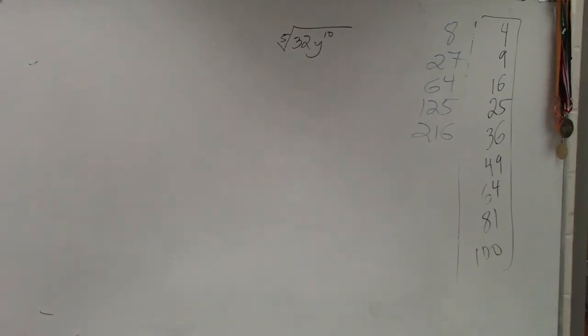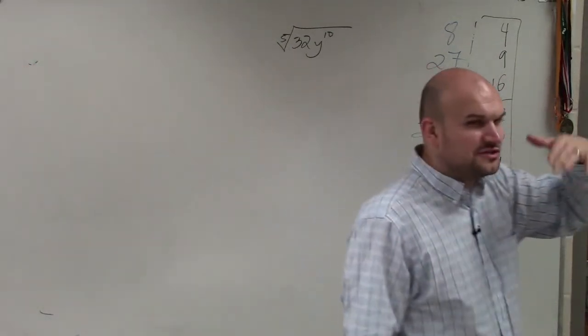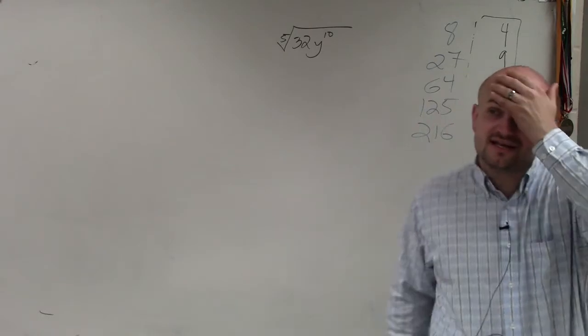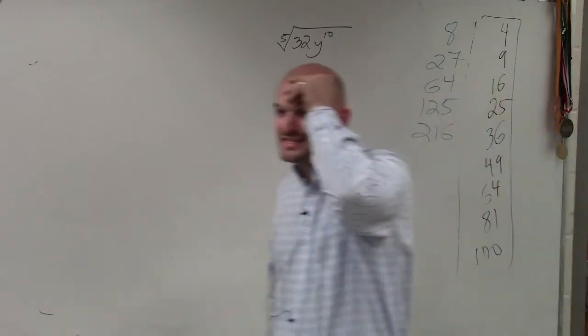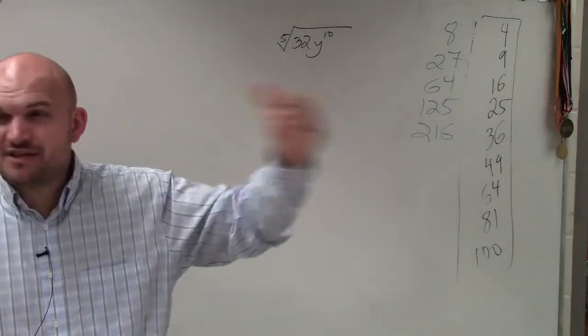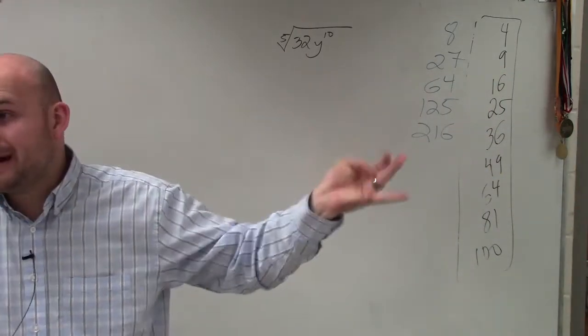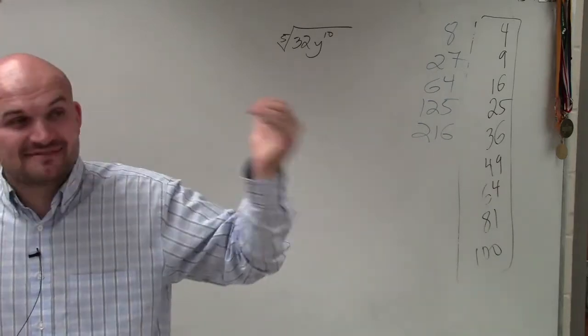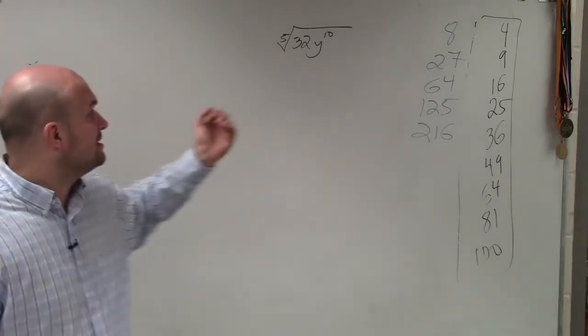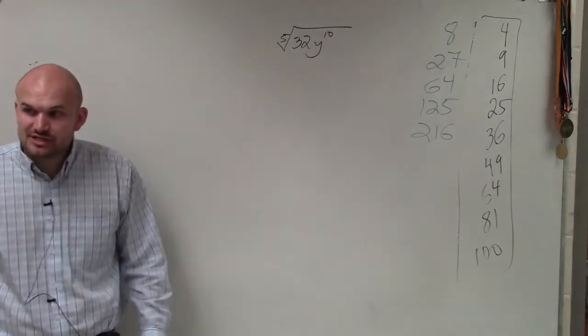So on this one, a lot of students have trouble with this. Because again, this is to the fifth root — that's saying what number multiplied by itself five times is going to give us 32.